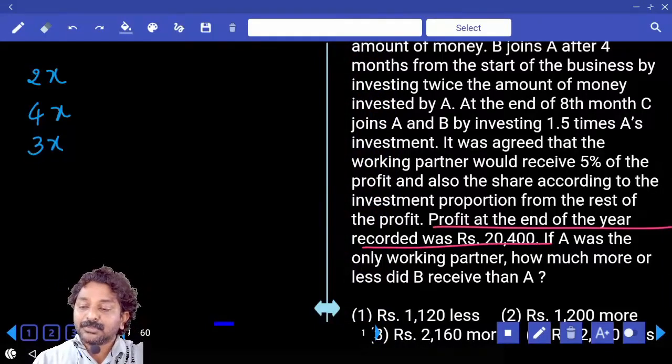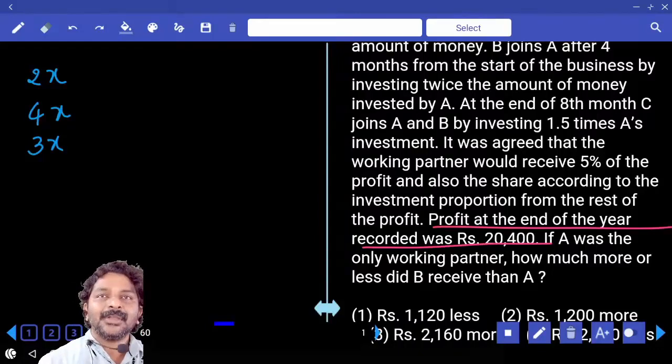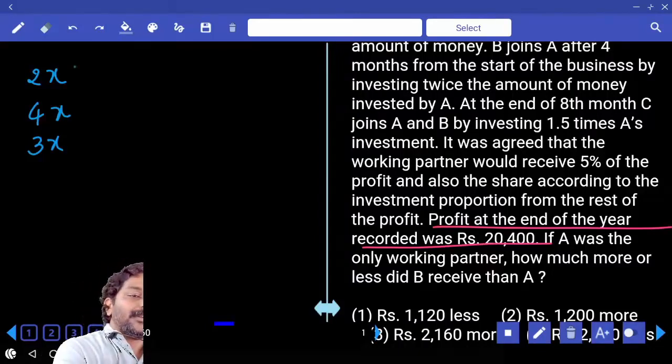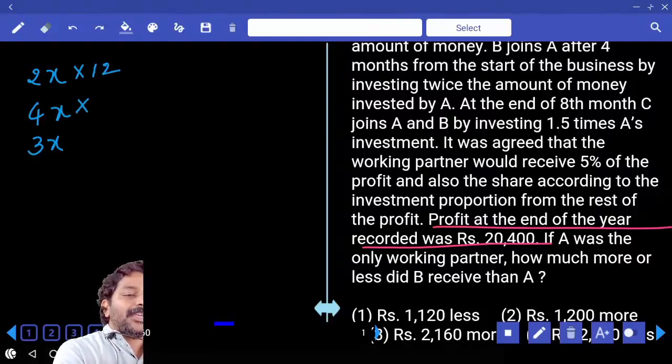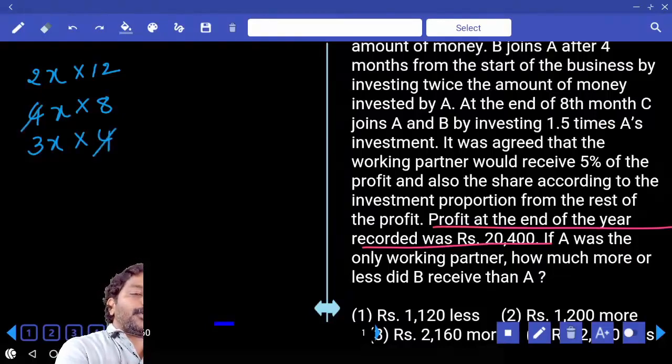If A was the only working partner, how much more or less did B receive than A? A invested for how much time? Come on, B joined after 4, he will be there for 8. C joined after 8, he will be there for 4. So it's 12, 8, 4.